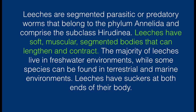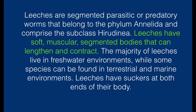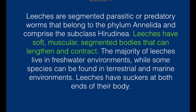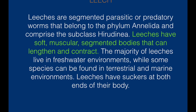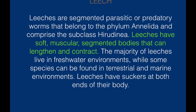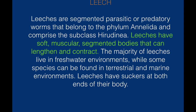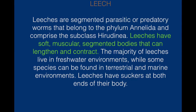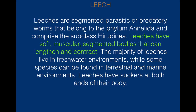Leeches are segmented parasitic or predatory worms that belong to the phylum Annelida and comprise the subclass Hirudinea. They have a soft, muscular, segmented body that can lengthen and contract. The majority of leeches live in fresh water while some species can be found in terrestrial and marine environments as well. They have suckers at both ends of their body.